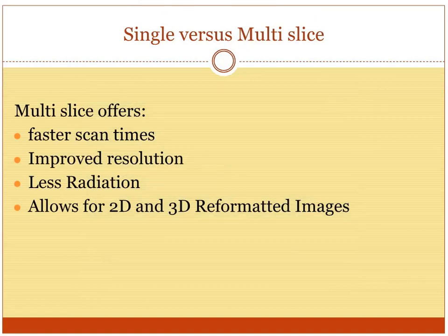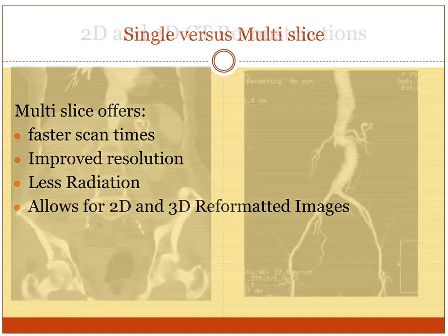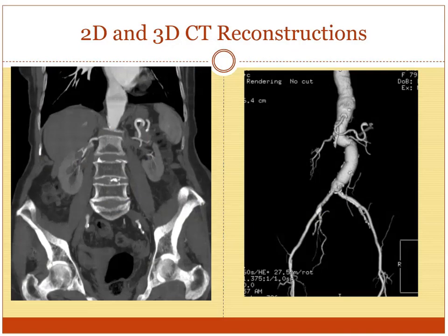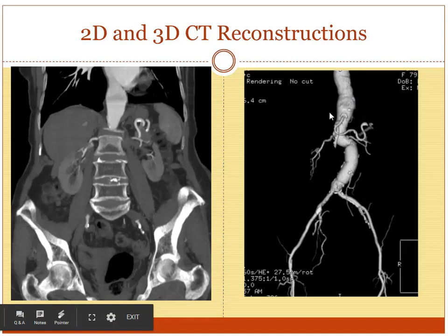Earlier we talked about how they started with the single slice and went on to multiple slices. With multiple slices, you can get fast scan times, way better resolution, less radiation, and it allows for really spectacular reformatted images. This is a 2D and 3D reconstructed image of the abdomen. With that little x-ray beam, they're able to create these amazing images. This is a view of the abdomen straight on — right kidney, left kidney, the bones of the pelvis, and the abdominal aorta. You can take this and spin it in different directions. It's pretty amazing the progress CT has made.